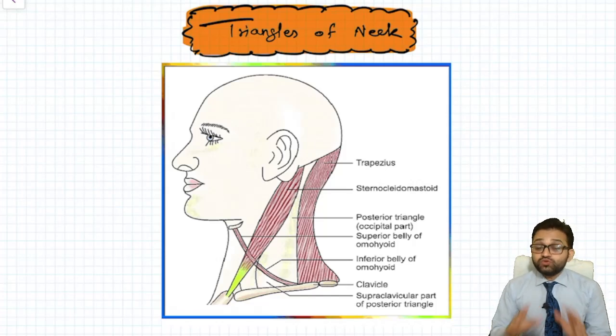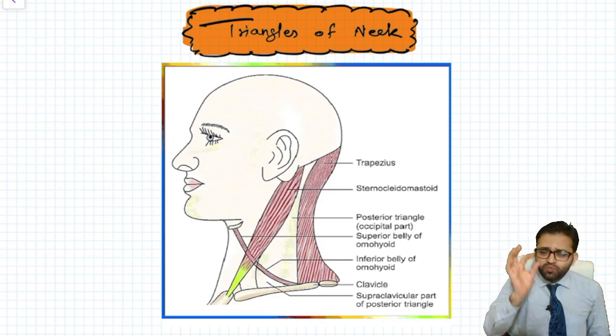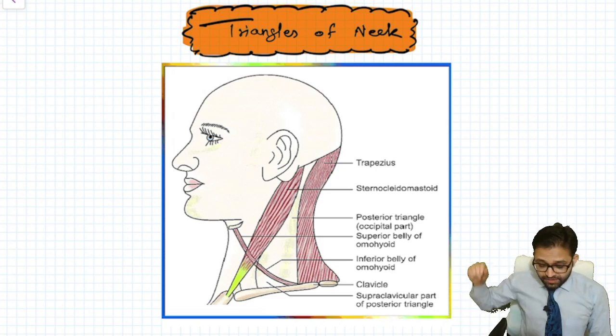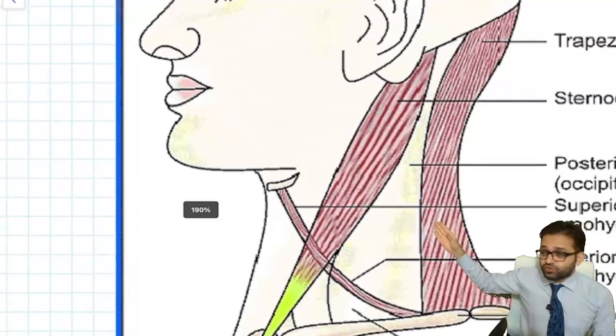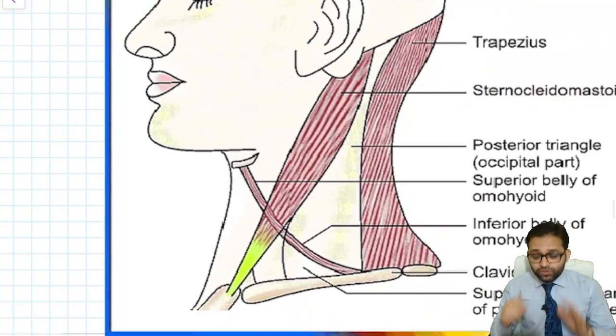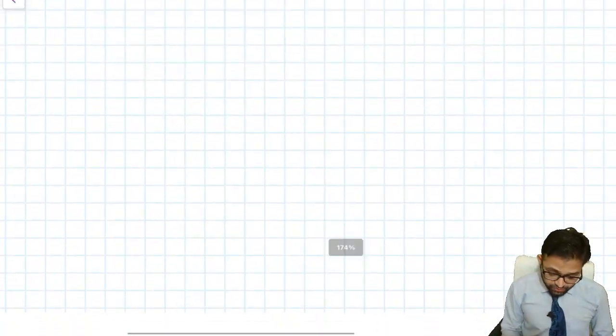Neck is divided into certain triangles: anterior triangle, posterior triangle, and also there is a small triangle, sub-occipital triangle. In your BD Chaurasia Sir textbook, you can see this diagram. We are going to understand step by step.